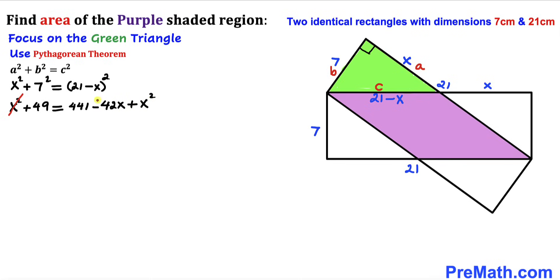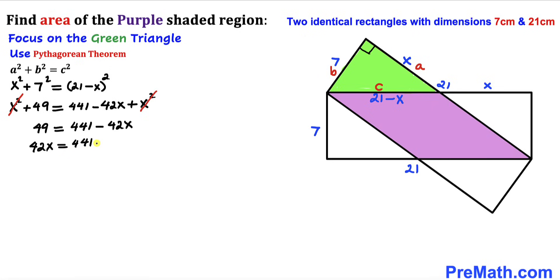We can see x squared on both sides, so they cancel out. We are left with 49 equals 441 minus 42x. Rearranging gives us 42x equals 441 minus 49, which simplifies to 42x equals 392.